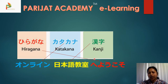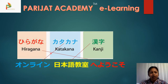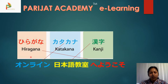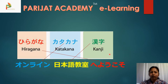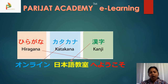Hiragana and katakana are both called kanas. As you can see, hiragana letters are of rounded shape — more curved, smooth letters — while katakana letters are more of straight lines. Hiragana and katakana are just like English alphabets; together they form a word.